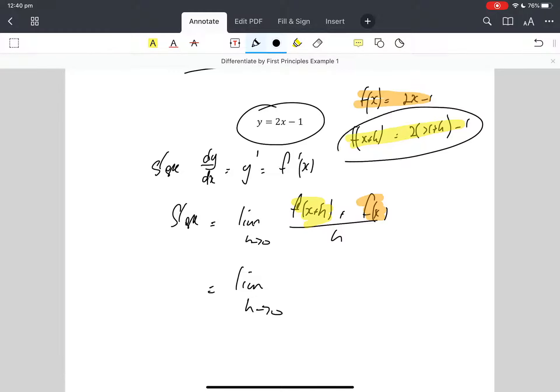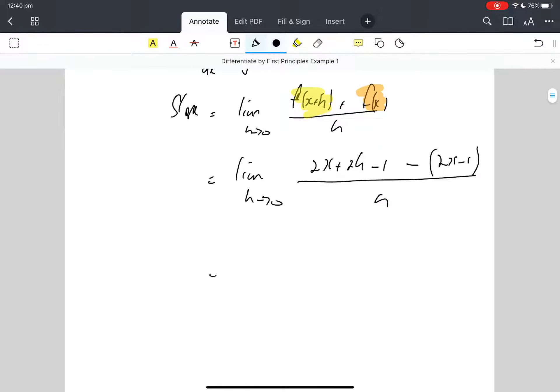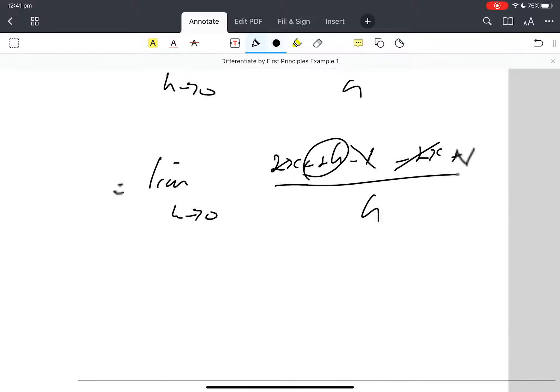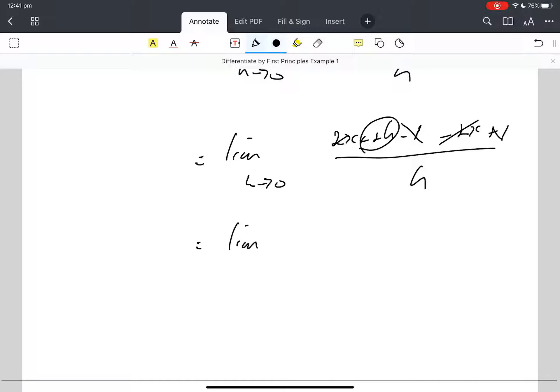So f(x+h) is just 2... Let's expand that bracket. And I'm subtracting f(x). Now there's a bracket there, isn't there? So it's minus 2x plus 1. What you'll notice is that the 2x and the minus 2x cancel out, the minus 1 and the plus 1 cancels out, and I'm only left with that on the top.